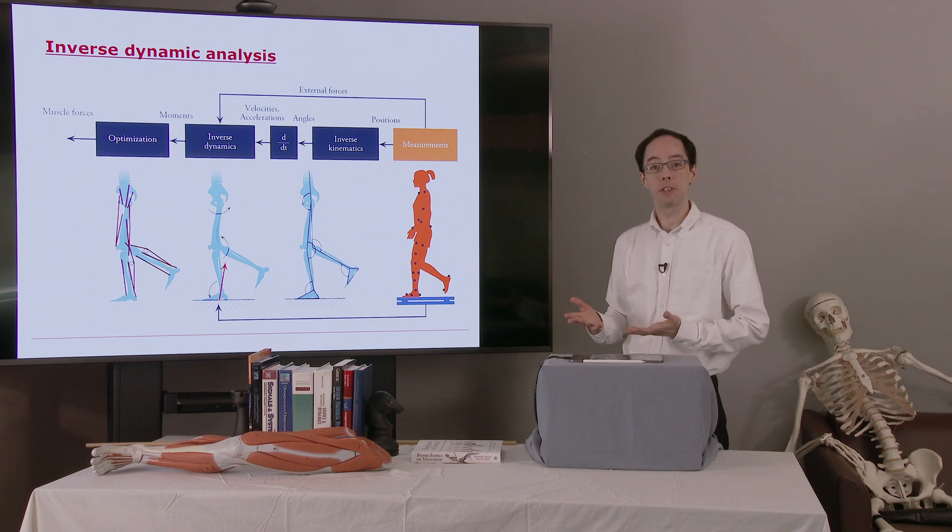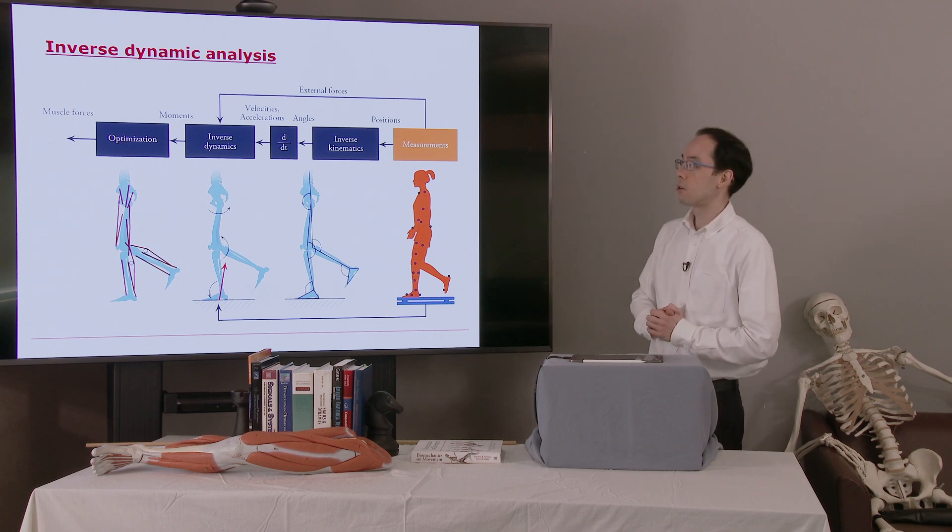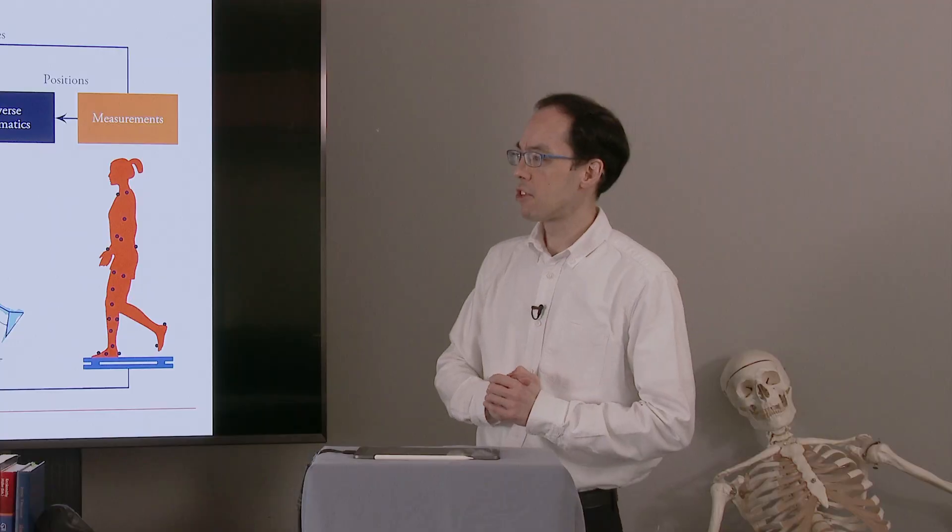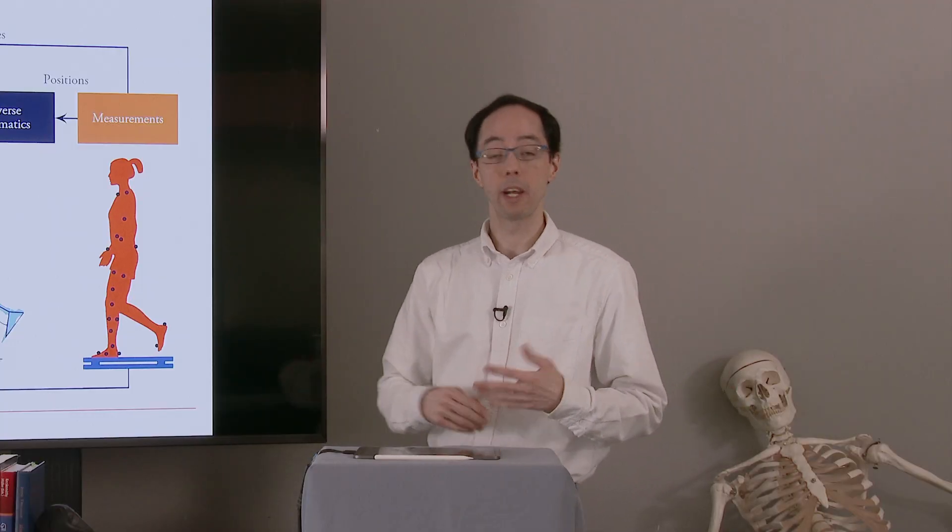Well, we have more muscles in the body than we have degrees of freedom. This is an overactuated system. So somehow the body's coordinating all the muscles to produce motion. And there's an infinite possible number of solutions there. The body has to pick one of these. And so does our software.